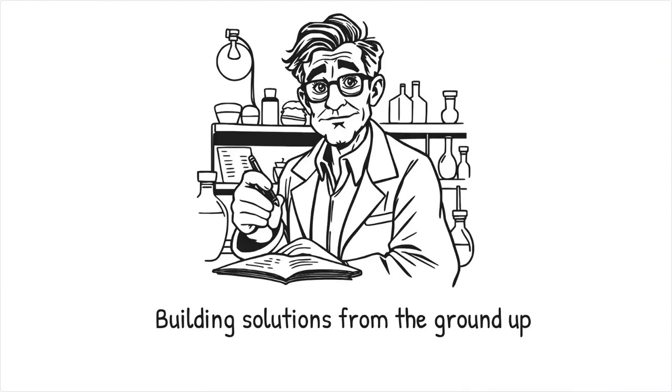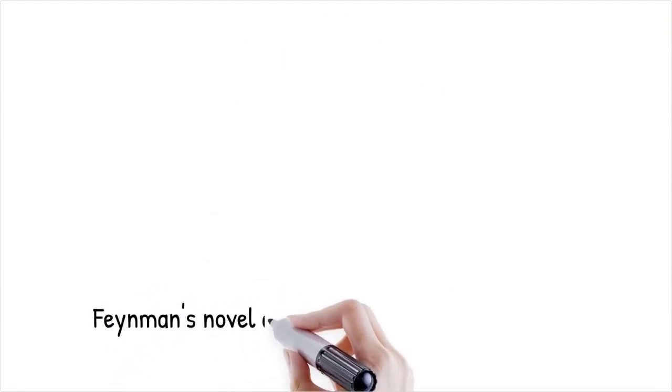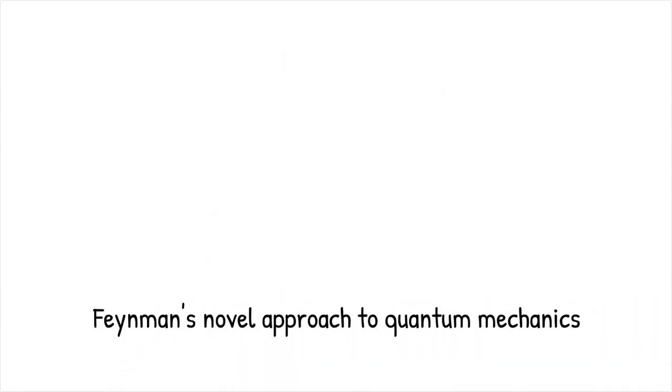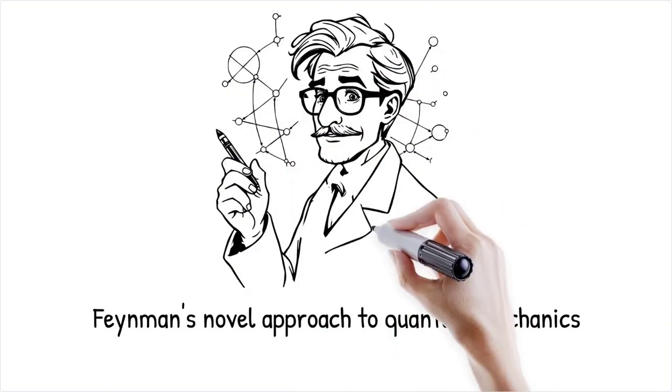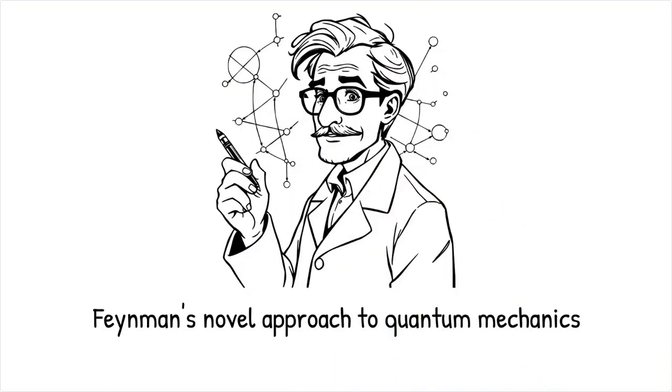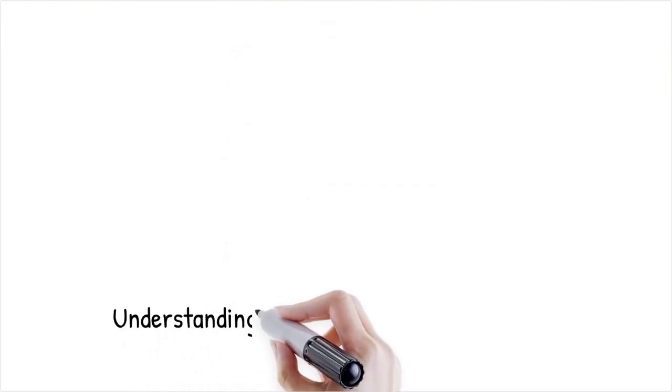His approach is widely used in engineering, physics, artificial intelligence, and business innovation today. Feynman's path integral formulation of quantum mechanics emerged from rethinking particle motion using sum over histories, a radically different approach from Schrodinger's wave function. It's like learning how to cook by understanding the chemistry of ingredients, rather than just following a recipe.